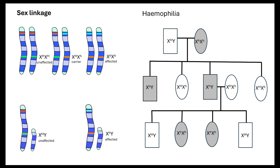The same approach applies to any genetic diagram. You should be able to work it out based on what you know about inheritance from male and female gametes and whether it's a dominant or recessive allele being passed on. In the exam, they may throw you off by giving you a random disease inherited through a sex-linked gene rather than colour blindness or haemophilia.